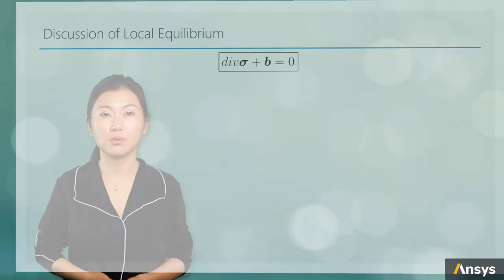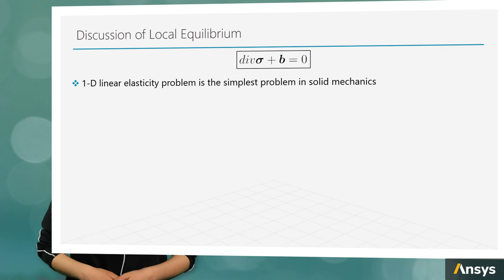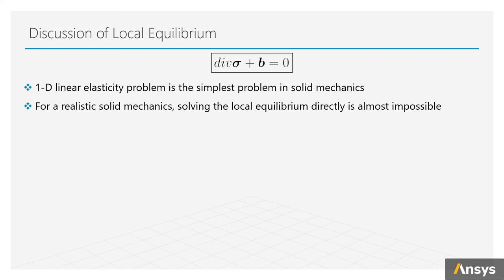This 1D linear problem we just solved probably is the simplest problem in solid mechanics. For a realistic mechanical problem, solving the local equilibrium directly is almost impossible. We cannot find continuous equations to represent deformation for complex problems.